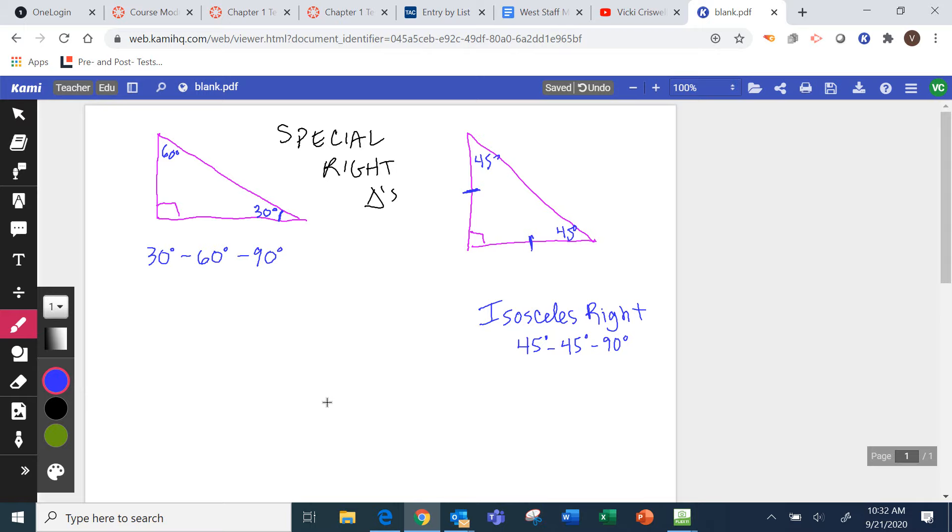And then what's special about right triangles in general is there is a theorem that we use a lot with right triangles and side lengths. Does anybody know what theorem I'm talking about? The Pythagorean theorem, right. We can always use a squared plus b squared equals c squared.